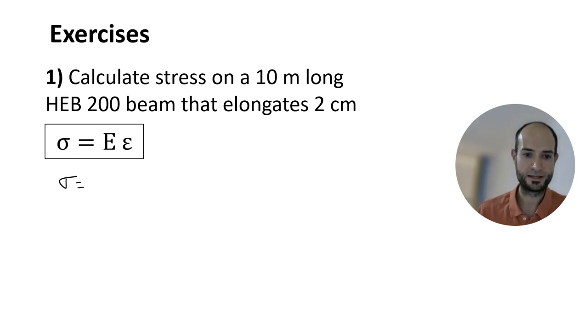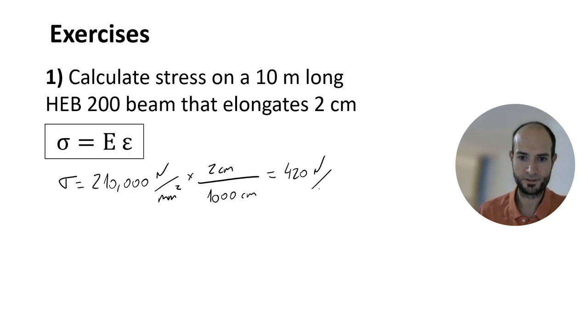Stress equals elastic modulus. It's a steel beam, so we know it's 210,000 newtons per millimeter squared. The strain is the elongation over the original length. So if we use centimeters, then below we also use centimeters, 1000.